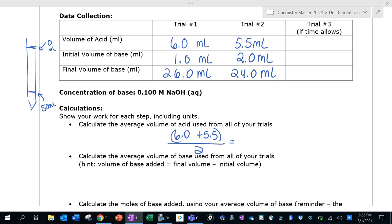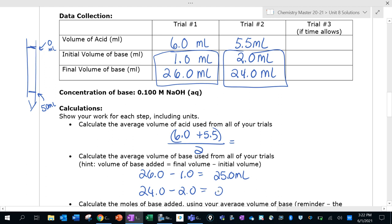Your average volume of base - the way you find your volume of the base from the burette is you subtract these two values right here. In my first trial, the volume of base added was 26 minus 1, so it looks like I added 25 milliliters of base. In my second trial it ended at 24, it started at 2, so it looks like I added 22 milliliters. Then I'm going to add these numbers up and divide them by two to get the average. Again, your numbers will be different, this is just an example.